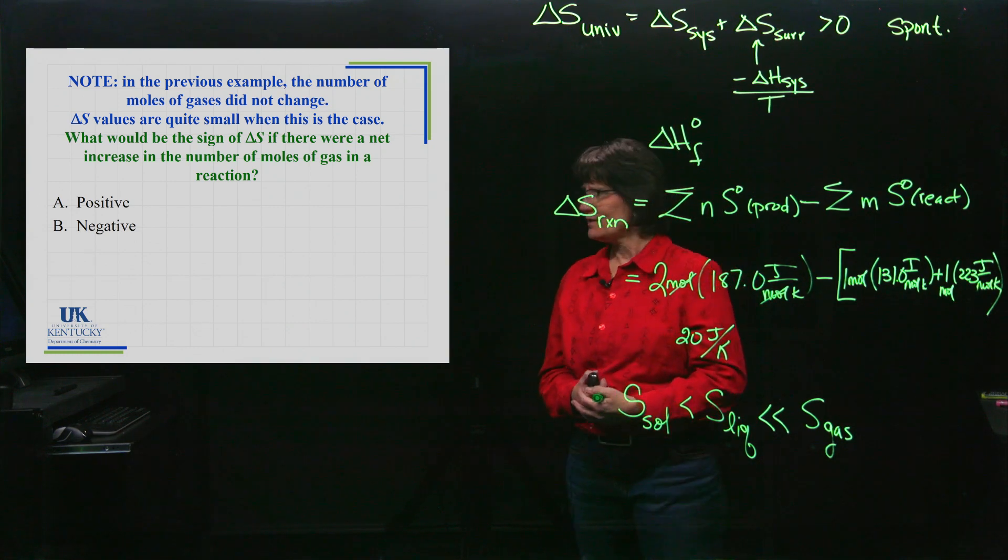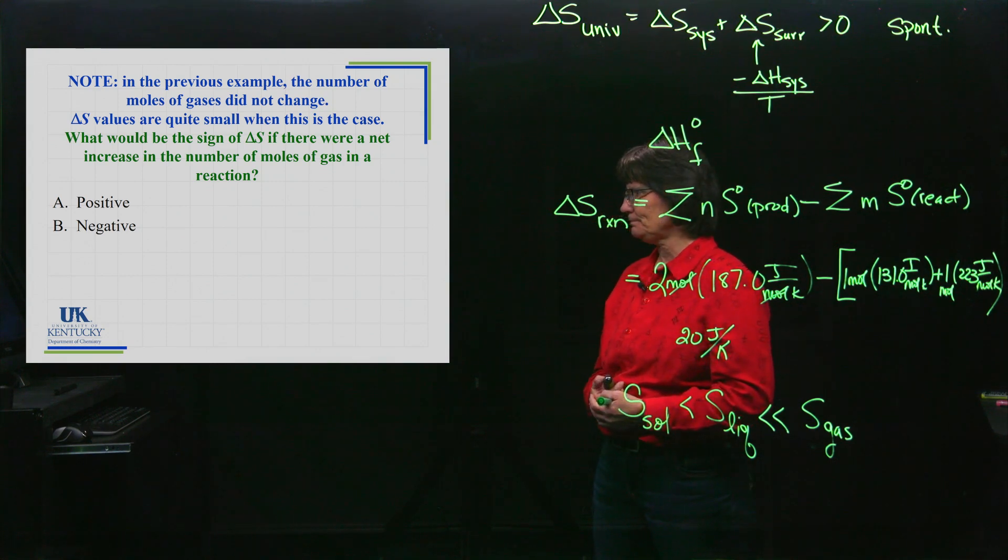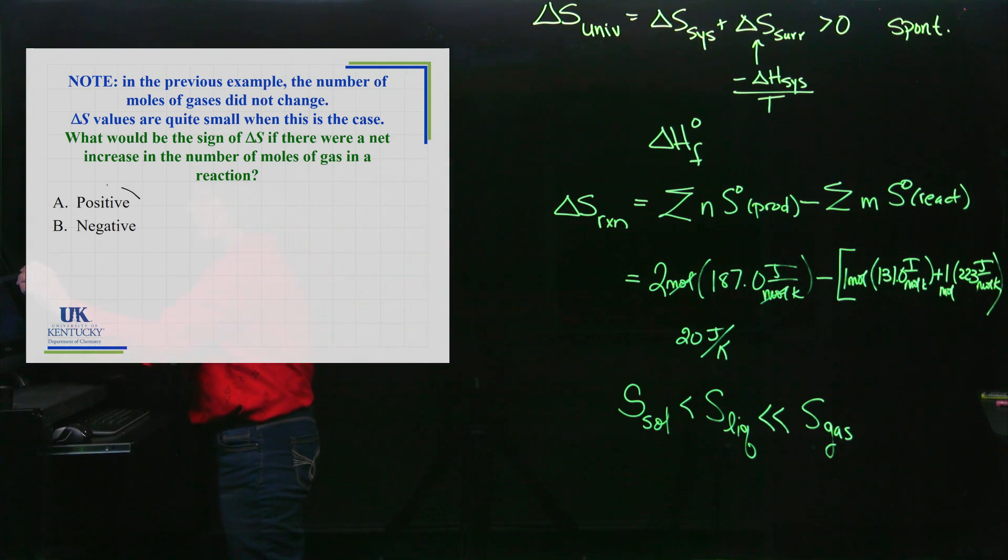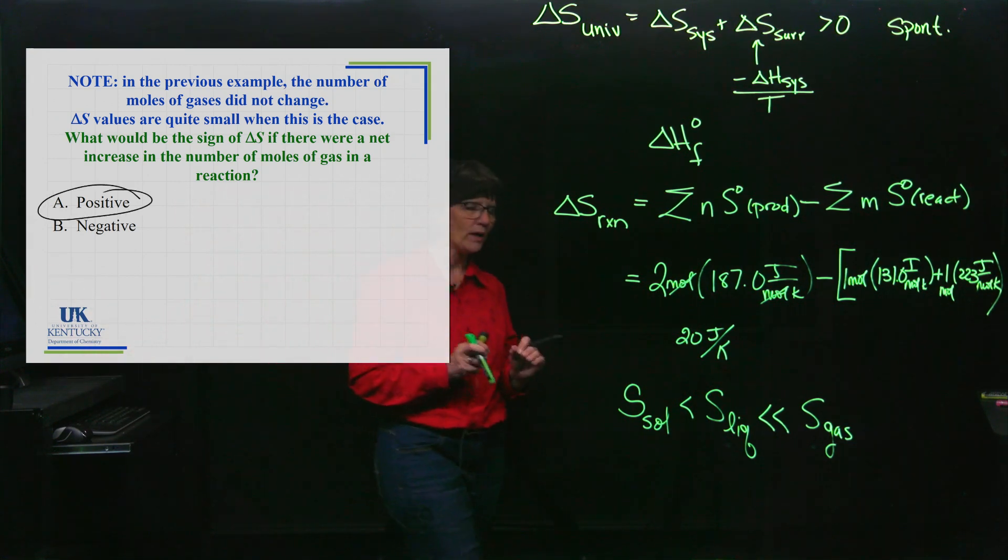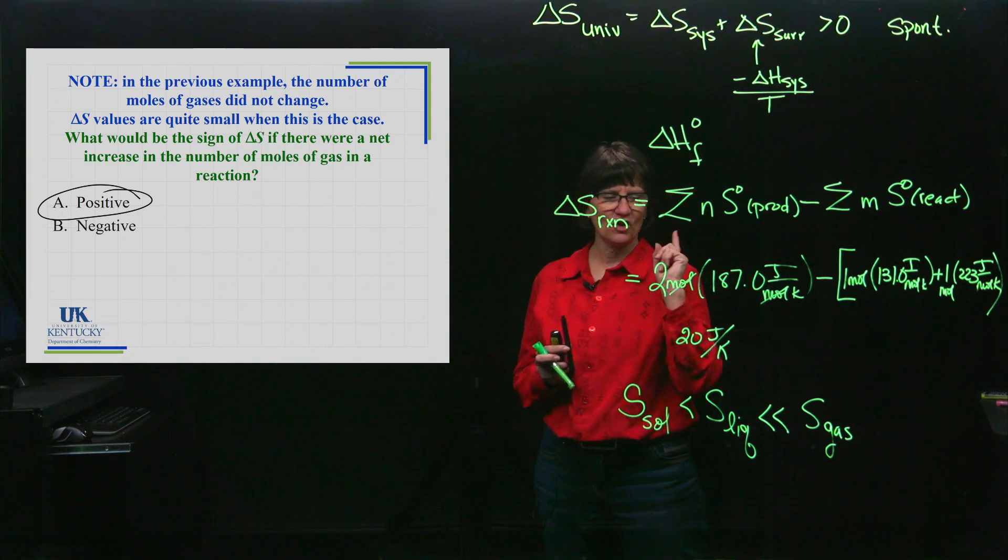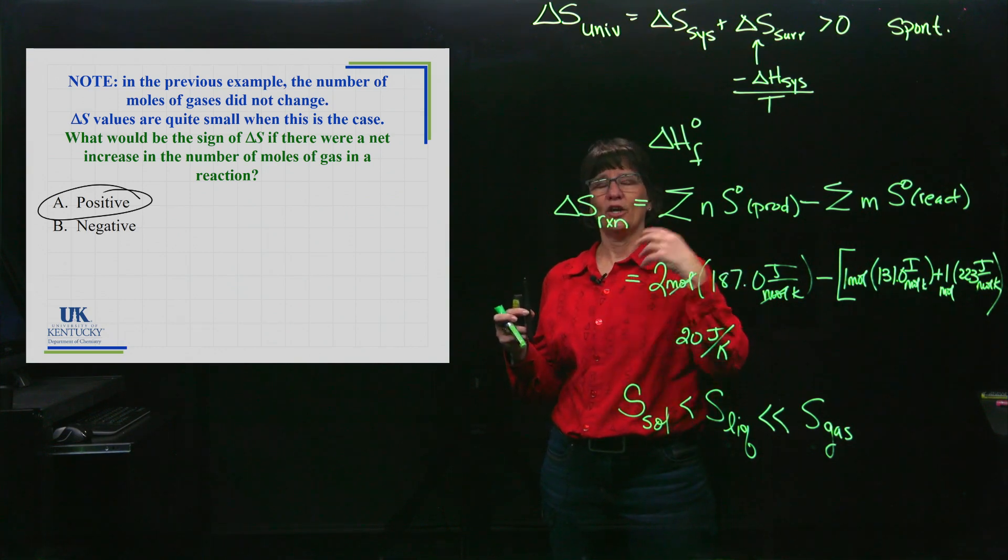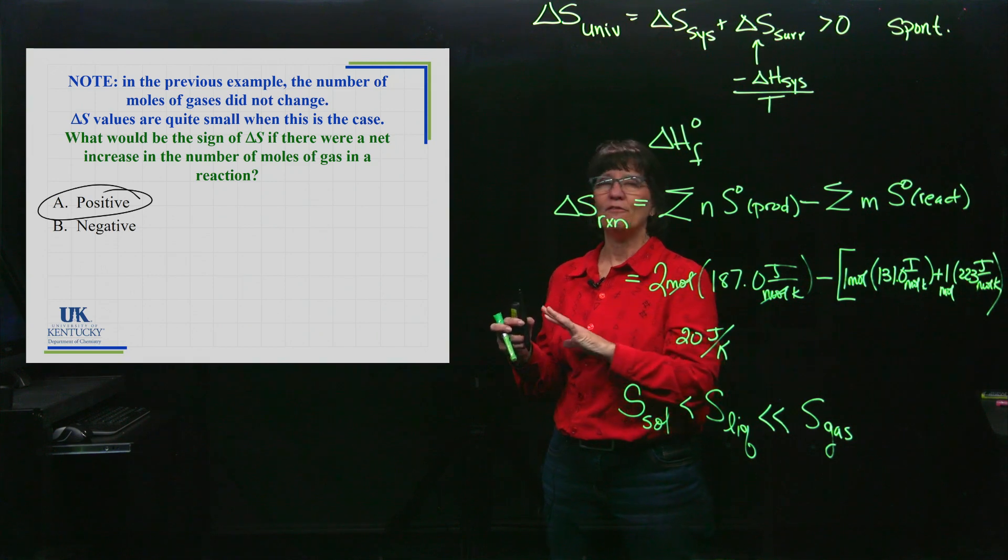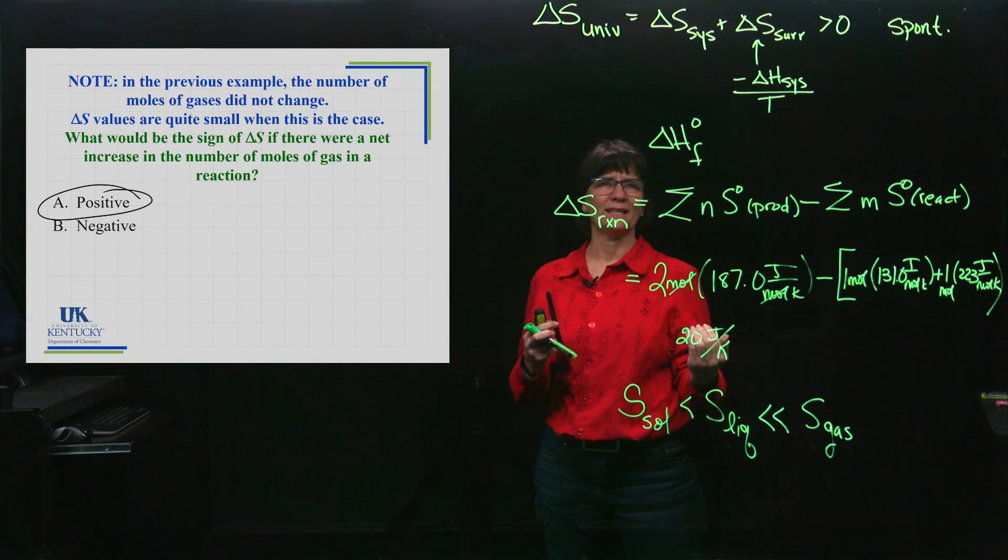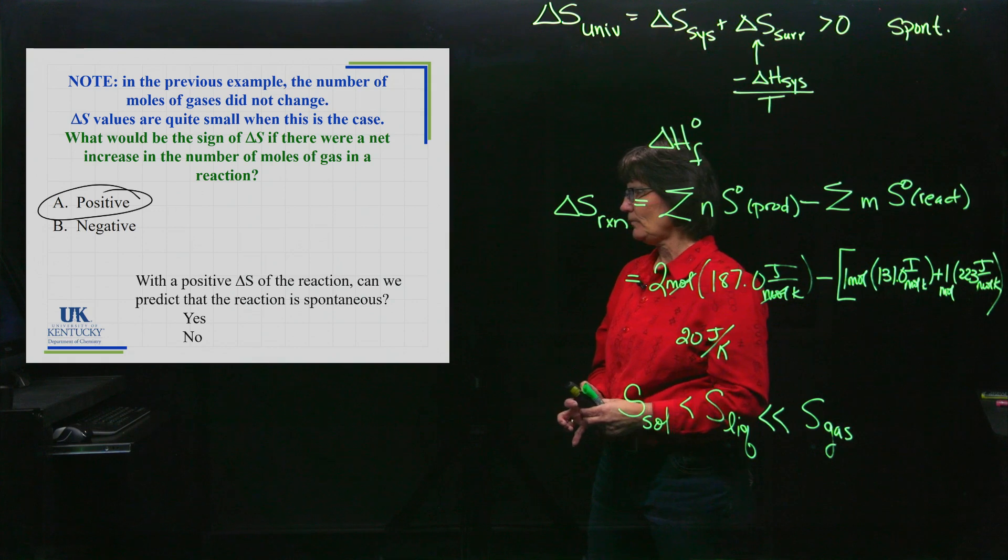If I have a reaction which is producing more gas than you started with, what's that going to do to the sign of ΔS for the reaction? It makes it positive, and that is always going to be the case. If you have a reaction, that's a quick thing you can look at and say: increasing entropy, decreasing entropy, just by looking at the gases. Are you getting more gas or using up gas? If the number of moles of gas don't change, you can't make a good judgment easily about the entropy change.